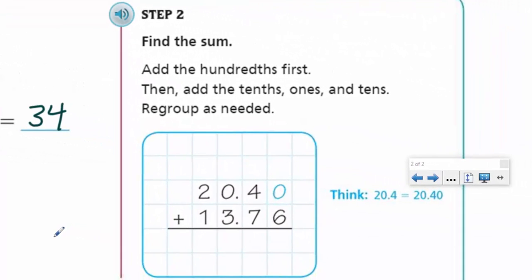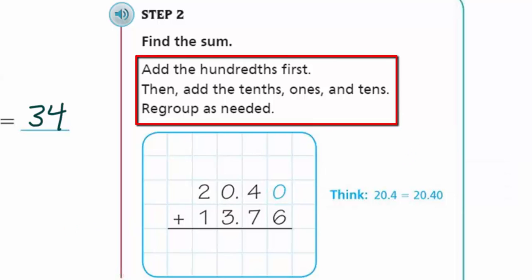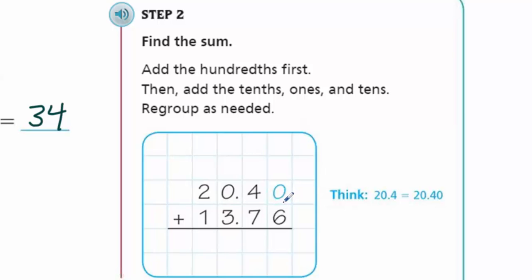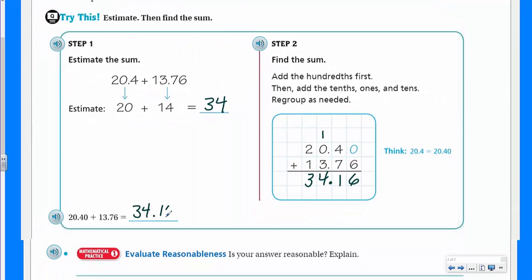Step one says estimate. Estimate the sum so we have 20.4 plus 13.76. So if we estimate 20.4 is about twenty and we're adding that to looks like we have about fourteen. Kind of rounded up if you look at that the tenths place shows a seven and that's five or more so we tend to up the score to a whole number. So twenty plus fourteen yeah it's going to be thirty four. Okay what we need to do here it says step two. So we'll come over here. Find the sum. Add the hundredths first then add the tenths ones and tenths. Regroup as necessary. And this is that equivalent decimal. So they've put in a zero in the hundredths place to show that it kind of helps keep our digits aligned.